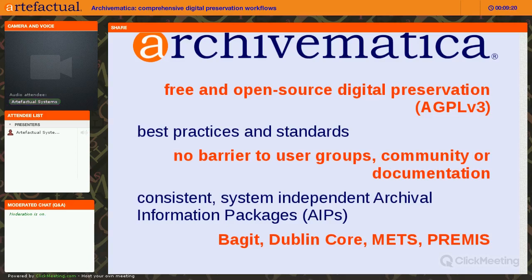From here forward I'll be referring to those as AIPs. Archivematica uses BagIt to package our AIPs — BagIt is a Library of Congress specification. We have a simple Dublin Core template in Archivematica that allows you to add simple description to your package. We have METS XML that includes PREMIS preservation metadata, restrictions, and rights.